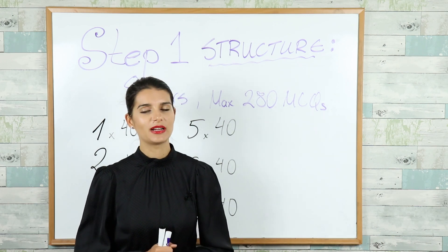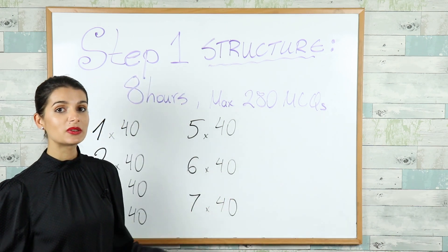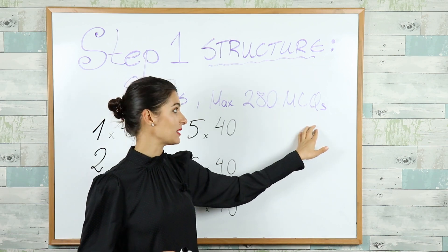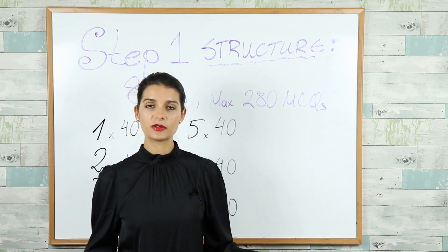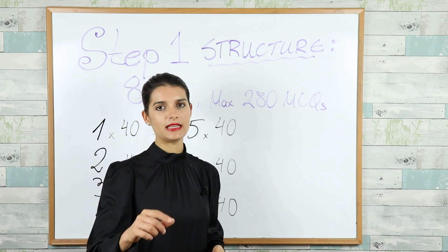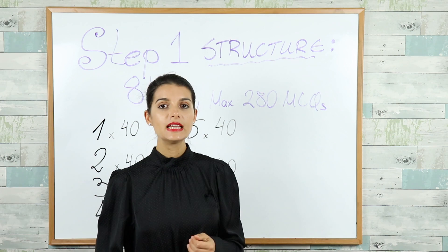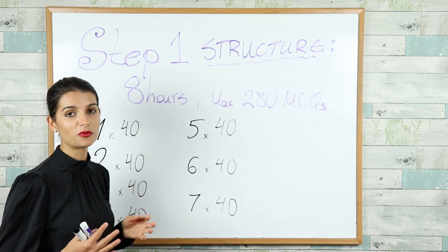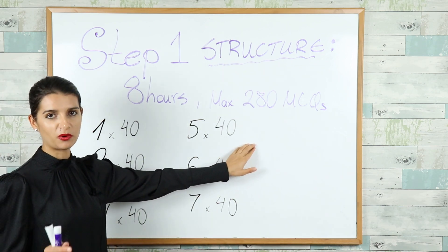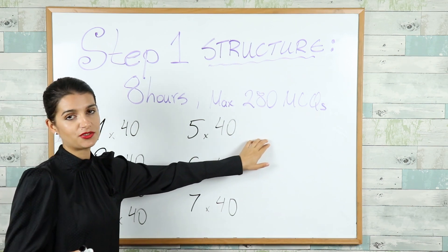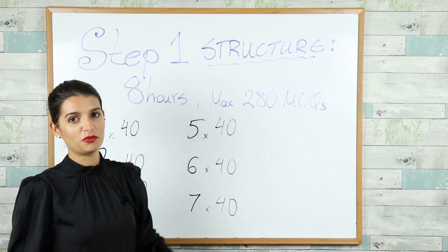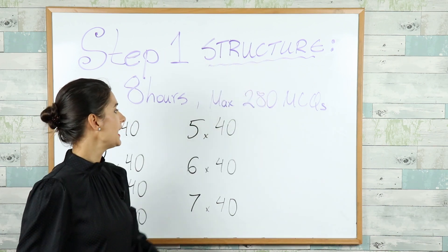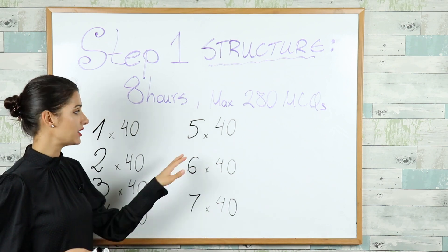Let's go over the structure of Step 1. It is an eight-hour computerized test with a maximum of 280 multiple choice questions. You read the question on screen and choose the correct answer from the options given. There are seven blocks of questions with a maximum of 40 questions per block — the actual number can vary, such as 38, 39, or 36 — which is why the maximum total is 280. You have one hour to complete each block, so seven blocks equals seven hours of testing time.